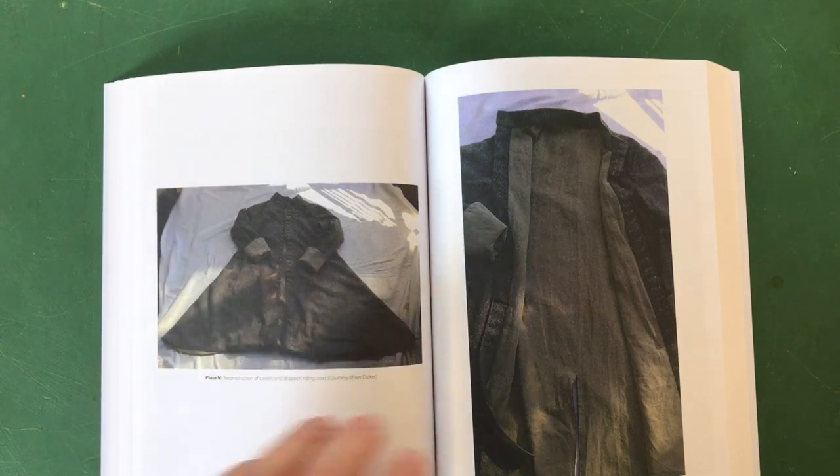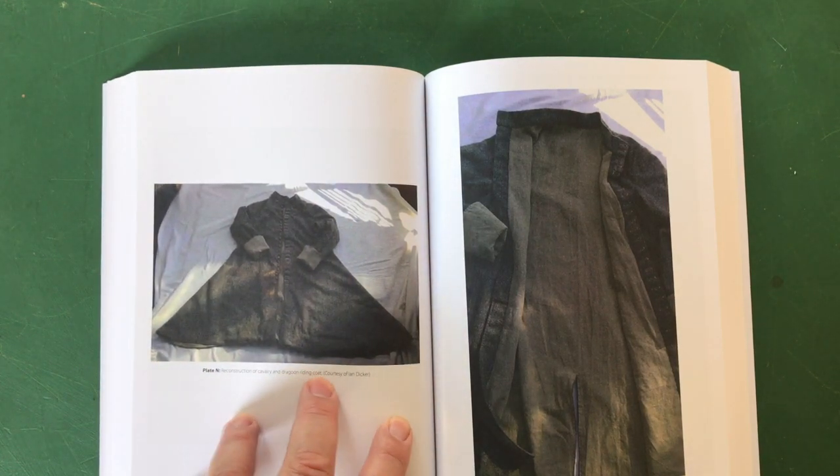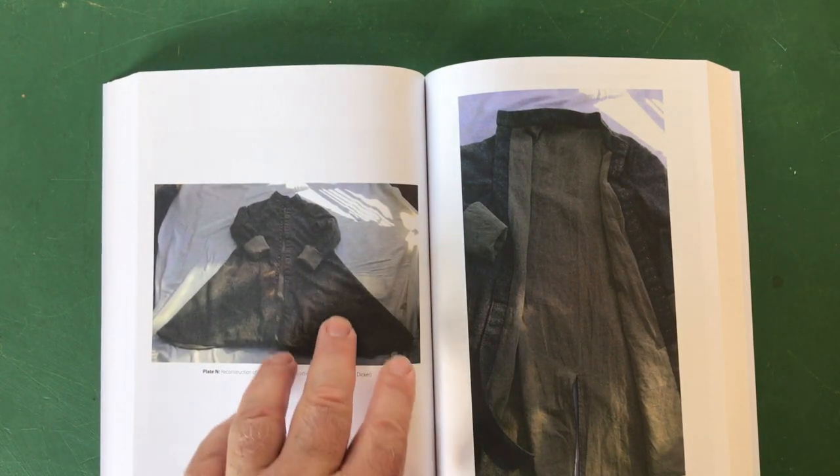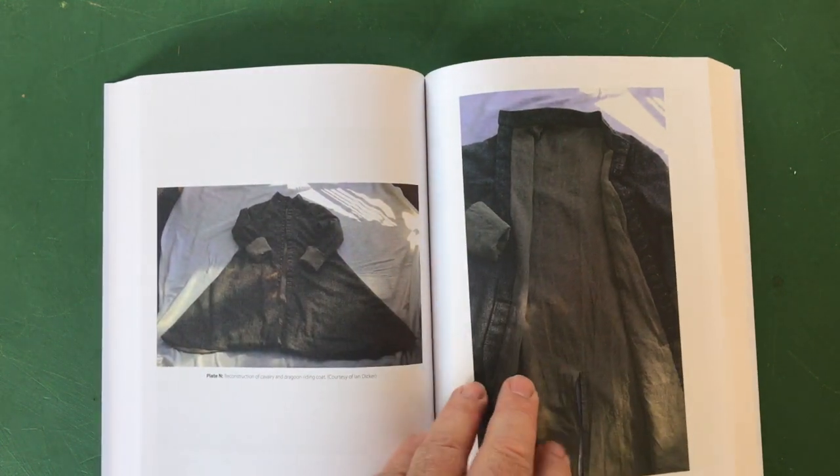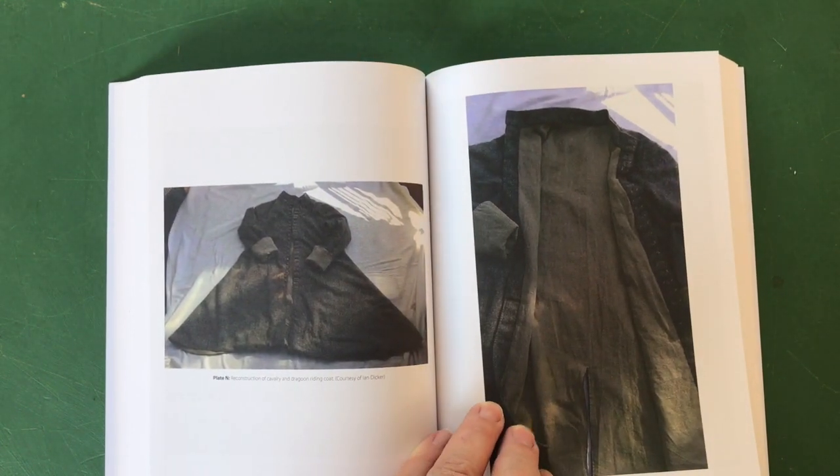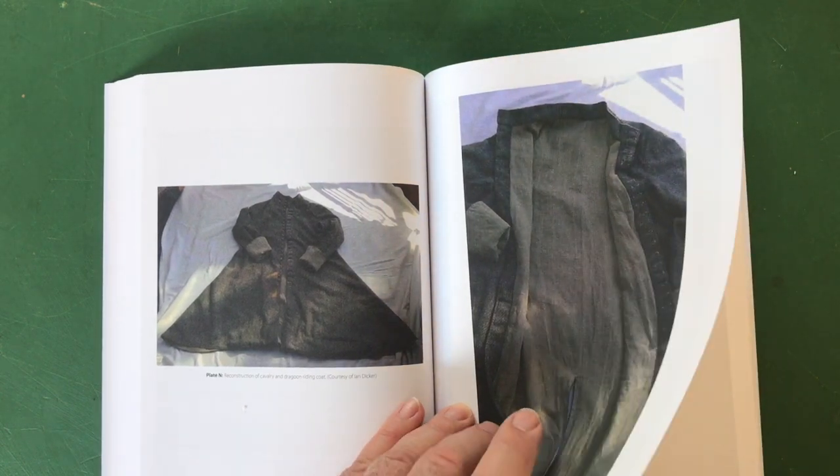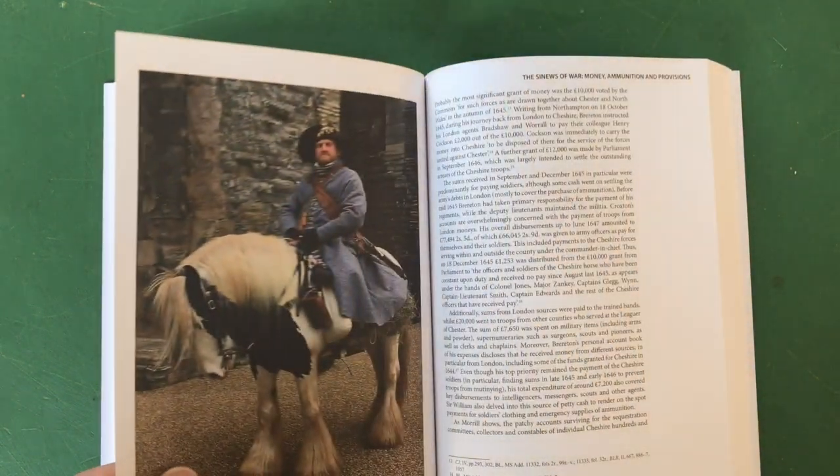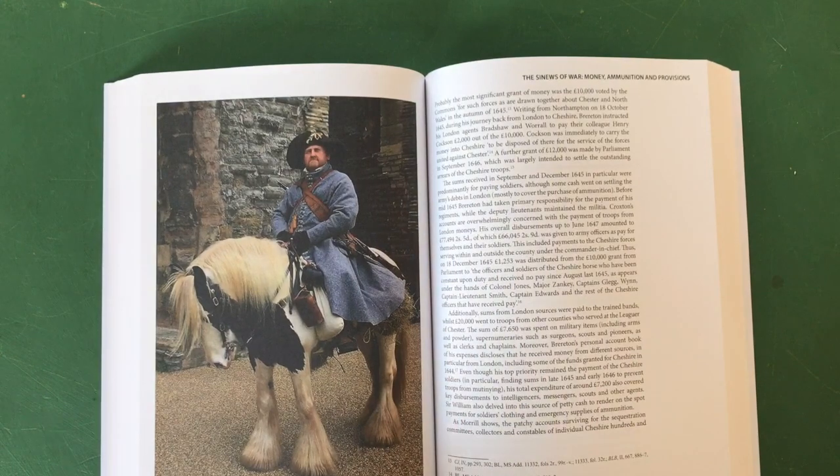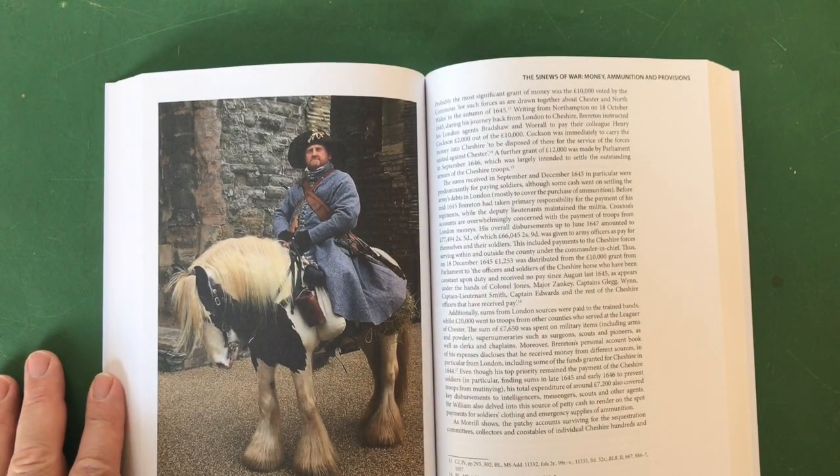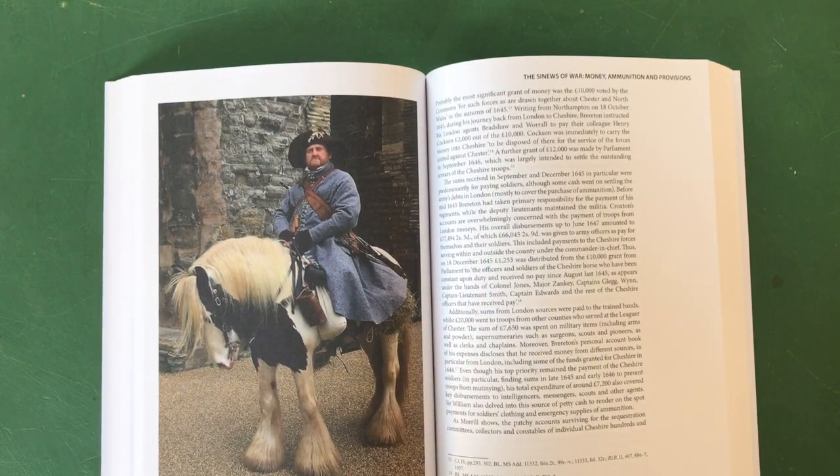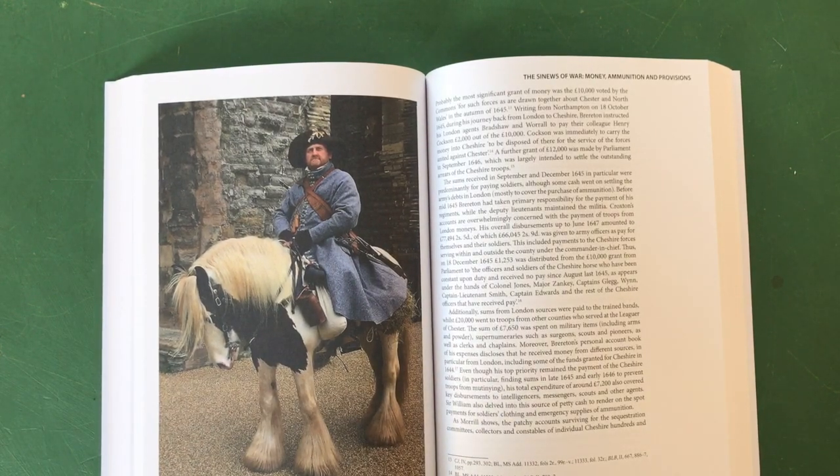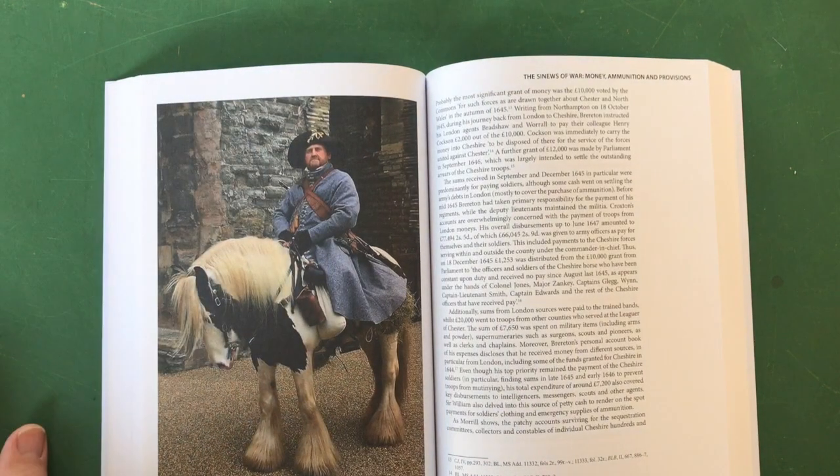That's useful stuff. And here's a reconstruction of a cavalry and dragoon riding coat. Again I probably would have used Photoshop a bit to brighten the image slightly to make it a little bit clearer, but nonetheless very useful and atmospheric photo. This is a lovely one of a chap actually dressed as a mounted dragoon on a lovely kind of cob horse with big fluffy feet. That's a lovely picture I think, very characterful.